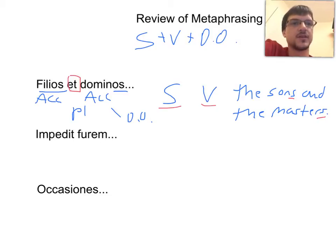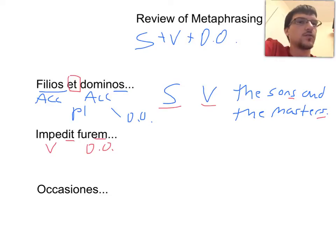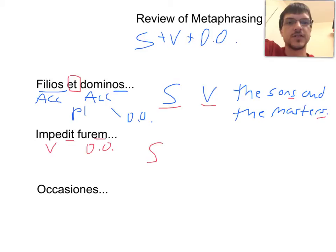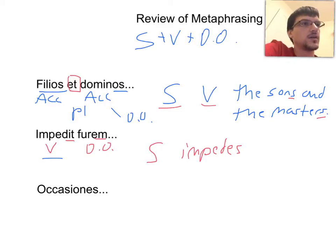Next: 'impedit furum.' We see the T ending on 'impedit,' so we probably have a verb. We have an EM ending on 'furum,' which probably means direct object, because it's accusative. We're still missing our subject, so we leave that as S. We do have our verb this time. So: Subject impedes the thief.